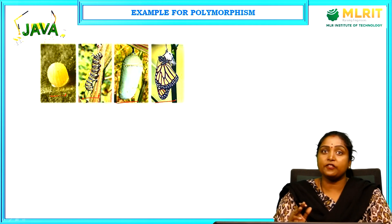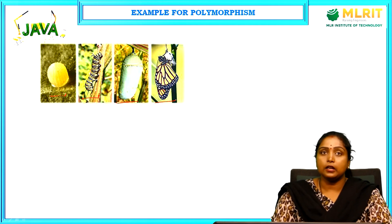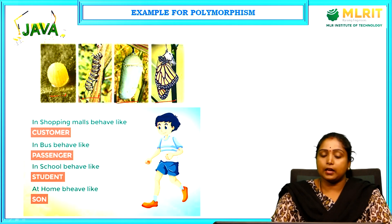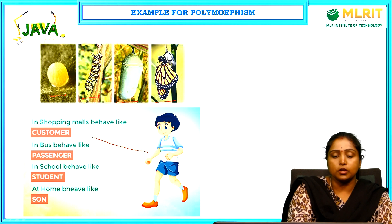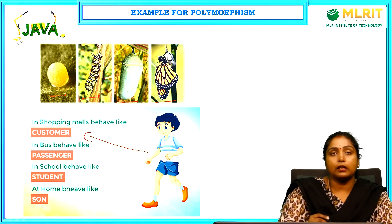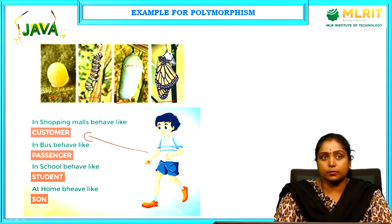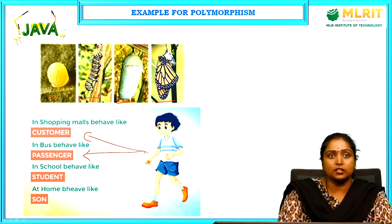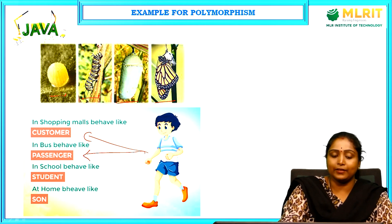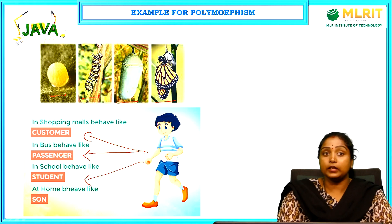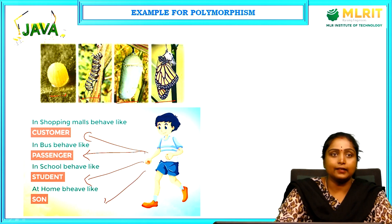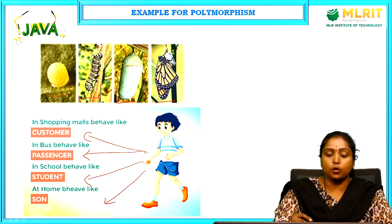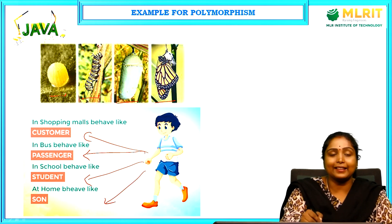Another example: when a person goes to a shopping mall, he acts like a customer; when he is on a bus, he acts like a passenger; when he is at school, he acts like a student; when he is at home, he acts like a son. One person acting in many different roles — this process is known as polymorphism.